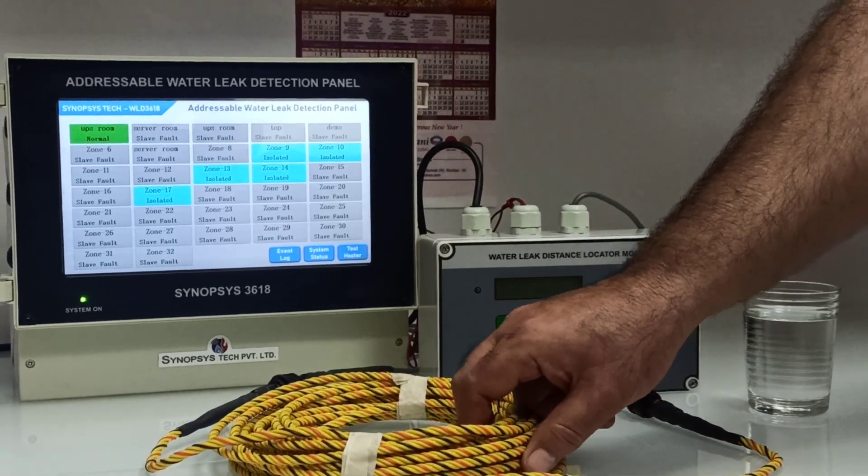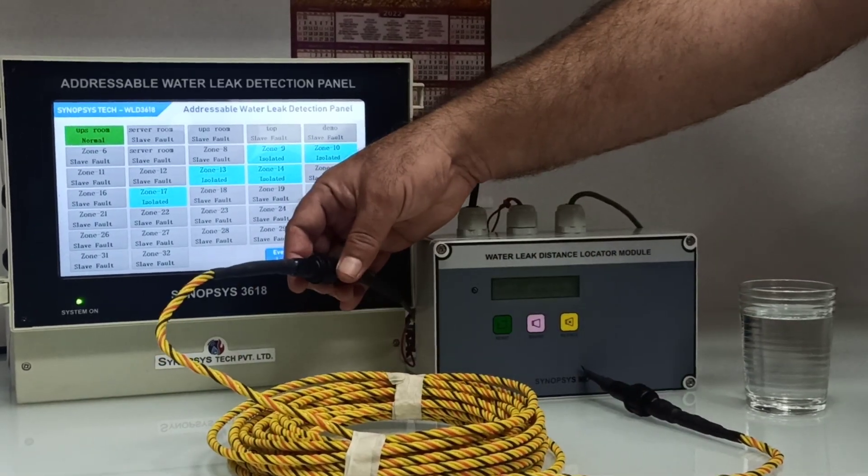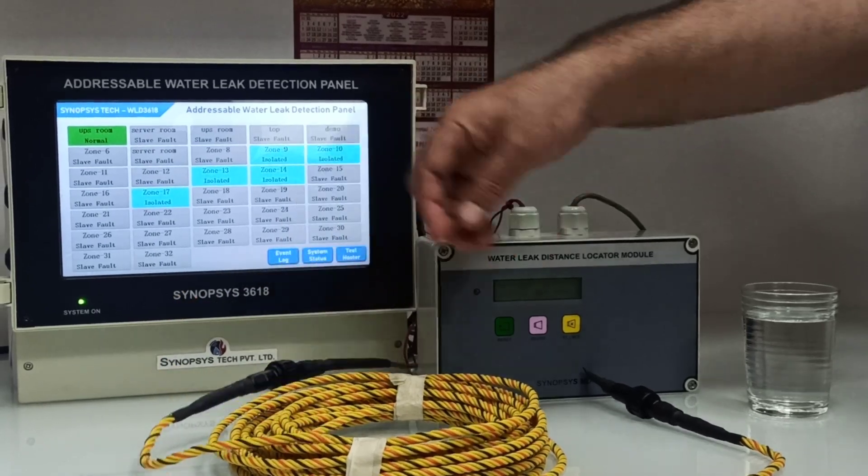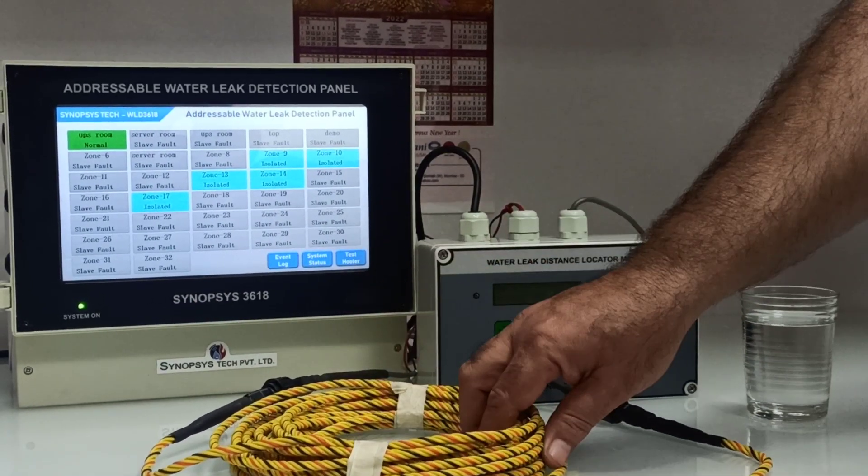This is the water leak addressable cable. It comes with connectors - the start of line and this is the end of line. This is a 10 meter cable.